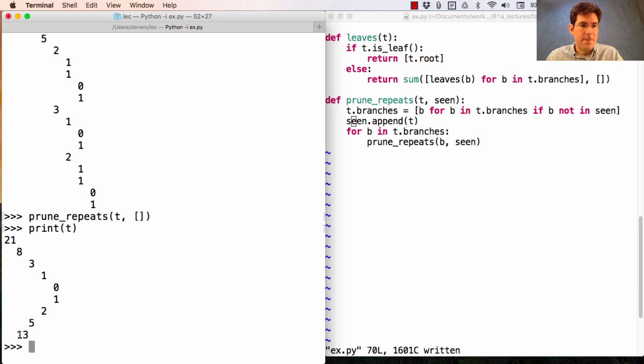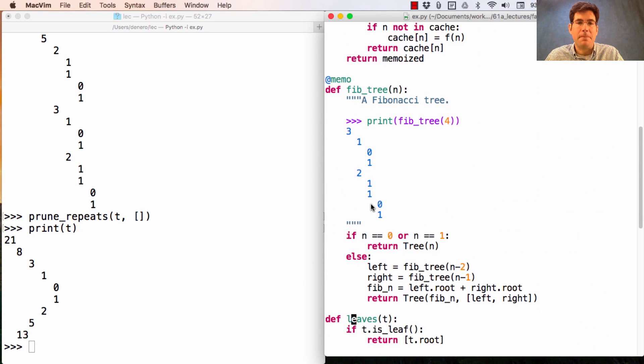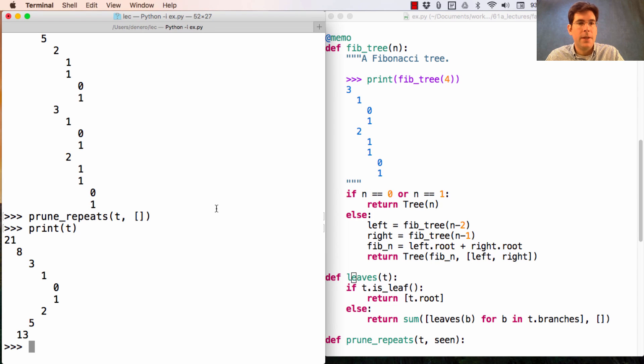Once I've computed fib eight and fib five, I don't need to recompute them when I create fib 13, because I already know what they are. And I got this structure because I had memoized fib tree. If instead I hadn't memoized fib tree, there would be no repeats in here at all.